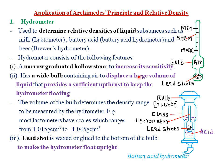The reason why the bulb should be wide is to displace a large volume of water that provides sufficient upthrust force to keep the hydrometer floating. If the upthrust force is not sufficient, the hydrometer won't remain floating and therefore won't give correct readings of relative density. That is why we have a wide bulb — to displace a large volume of water, providing sufficient upthrust to keep the hydrometer floating.